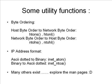Some utility functions are used to convert integers from host byte order to network byte order. We use htons for a short int, which stands for host to network short. Similarly, there is htonl, which is host to network long — for a four-byte integer conversion. To convert back from NBO to HBO, we have network to host short and network to host long.